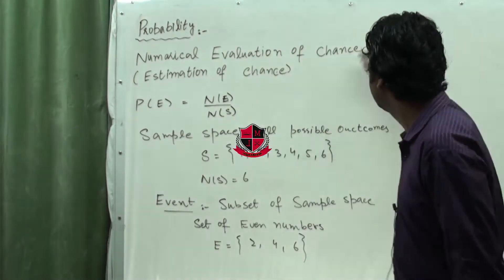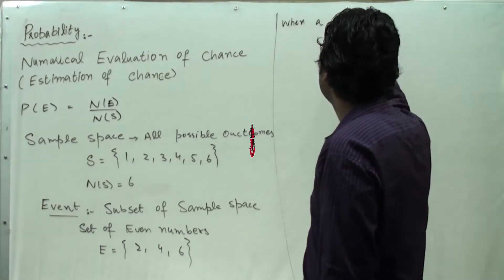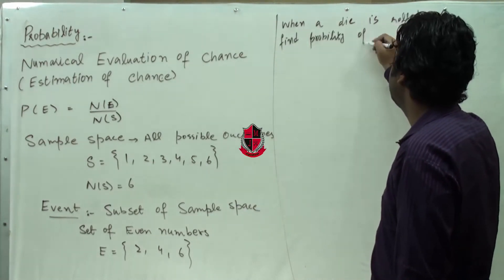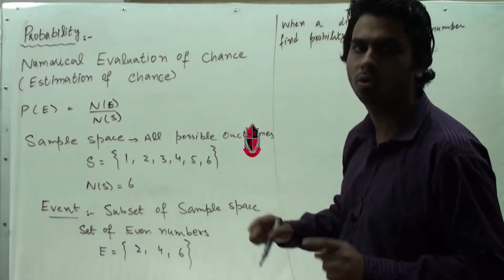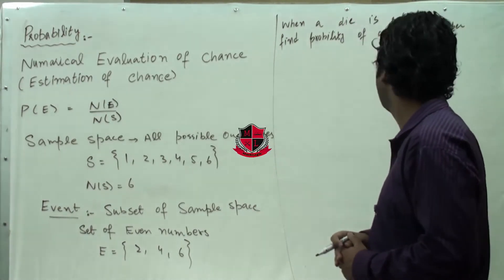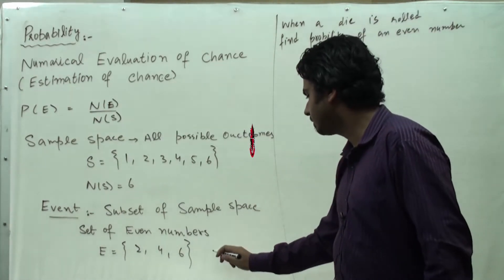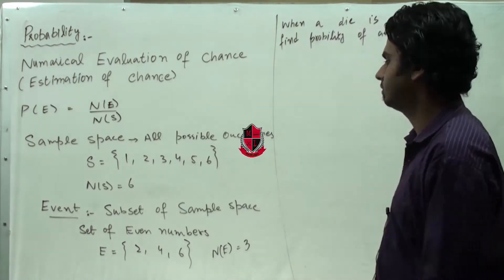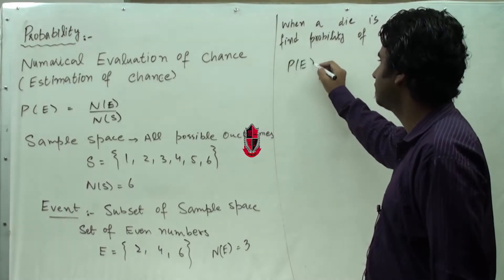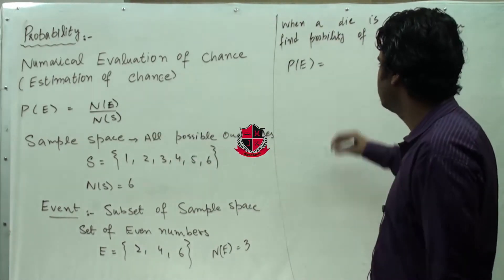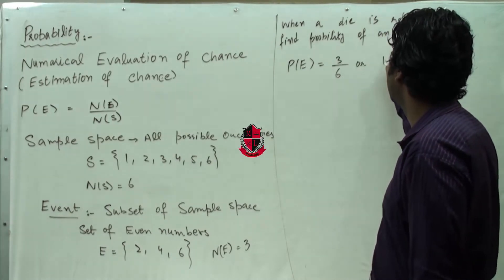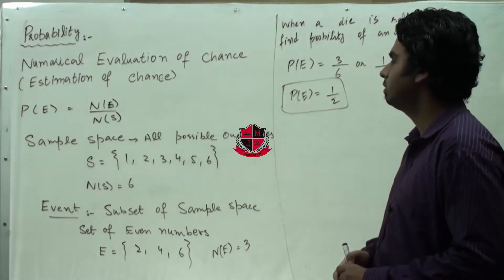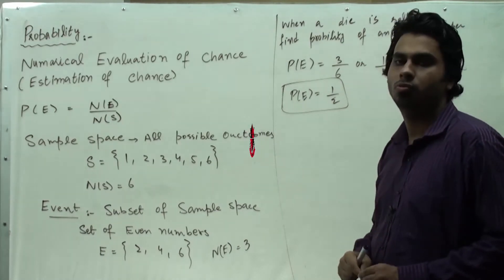So if I say: when a die is rolled, find the probability of an even number. If a die is rolled only once, we need to find the probability of an even number. How many even numbers are in this set? The number of elements in set E are 3, and the number of elements in set S is 6. So the probability of an even number is 3 over 6, or we can write 1 over 2. So the probability of event E is 1/2 — meaning there is one chance out of 2 that we get an even number.